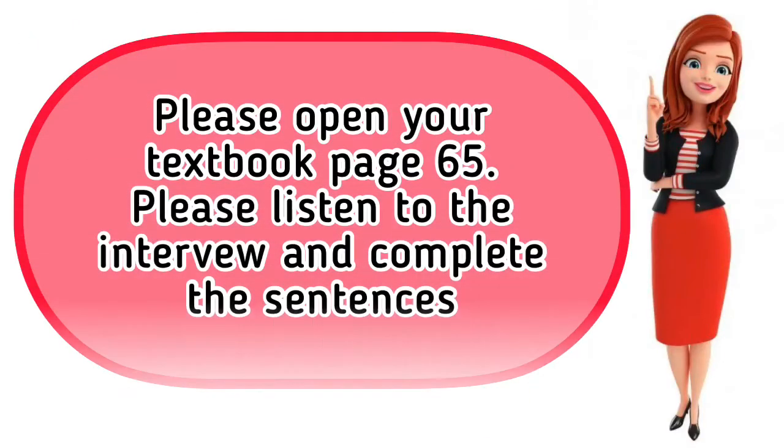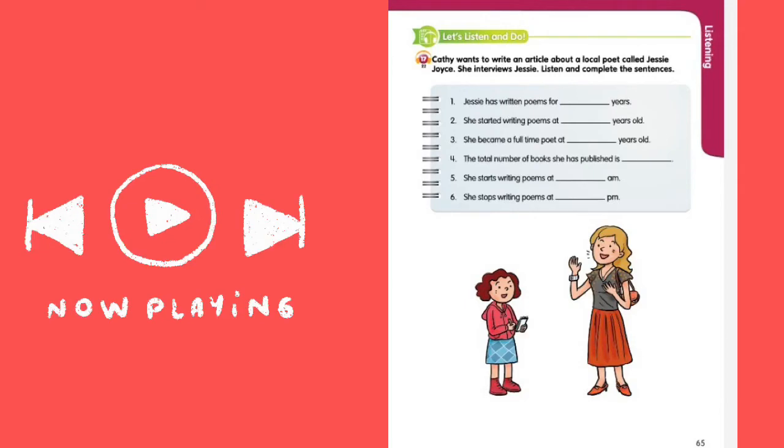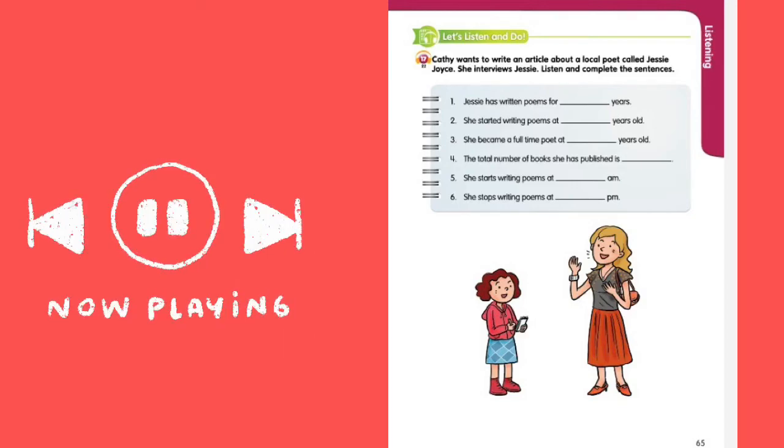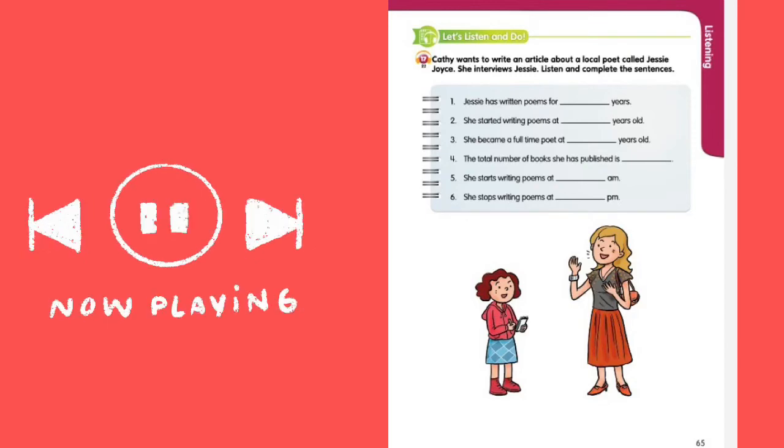So now, please open your textbook, page 65. Please listen to the interview and complete the sentences. Activity 17, Track 22. Cathy wants to write an article about a local poet called Jessie Joyce. She interviews Jessie. Listen and complete the sentences.